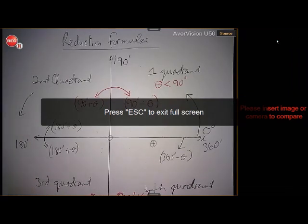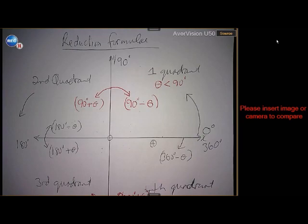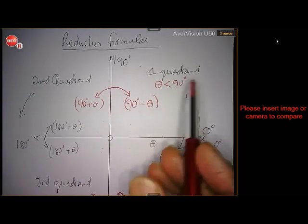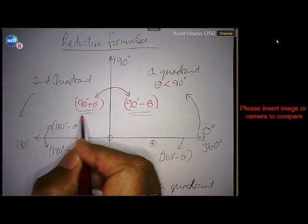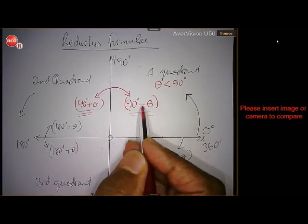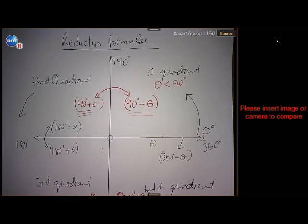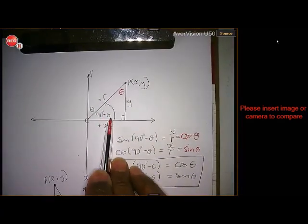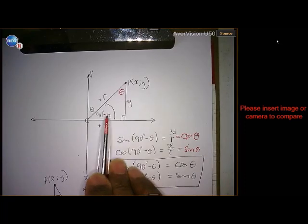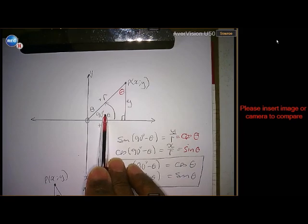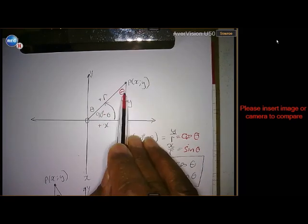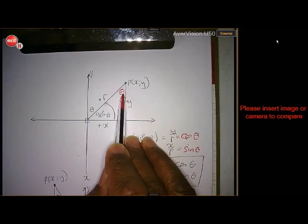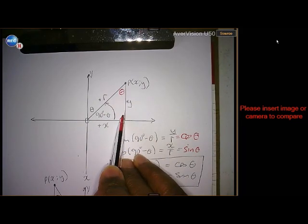This is video two on the reduction formulas. We're going to zoom into the angles 90 minus theta and 90 plus theta — first quadrant and second quadrant. So here I have 90 minus theta in the first quadrant. If this angle is 90 minus theta and that is 90, then this has to be theta, because the angles of a triangle must add up to 180 degrees.